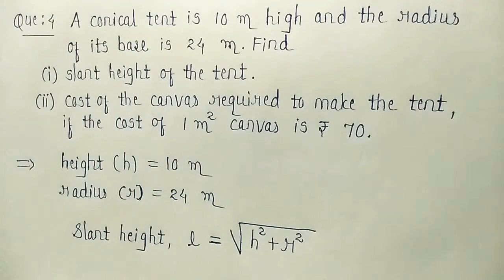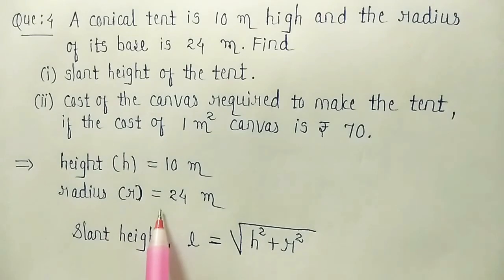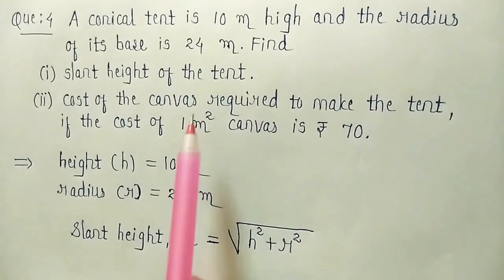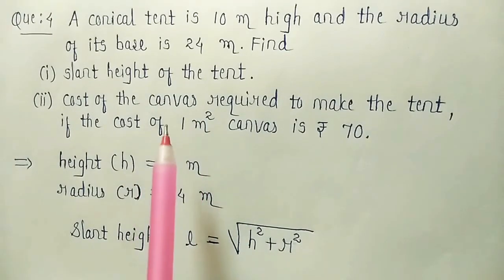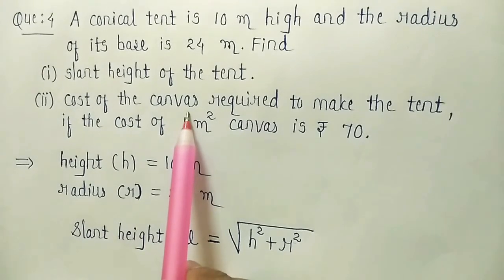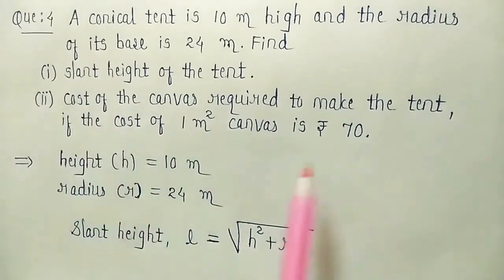Now which area will we find? Curved surface area of the cone. Because it is a conical tent. So we will find curved surface area of the cone. So that much of canvas will be required to make the tent. Now once we find the area of the canvas required, then we can find the cost.